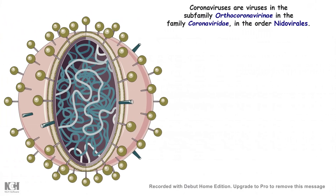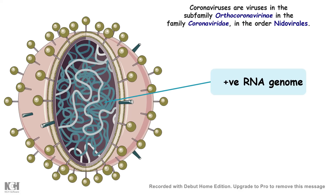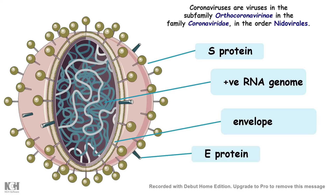Coronaviruses are from the sub-family Orthocoronaviridae and its order is Nidoviridae. They are simply single-stranded RNA-containing viruses, meaning RNA is their genetic material. They have an envelope and several proteins such as S-proteins (spike proteins), envelope proteins, and M-proteins (membrane-associated proteins) decorating their whole envelope.